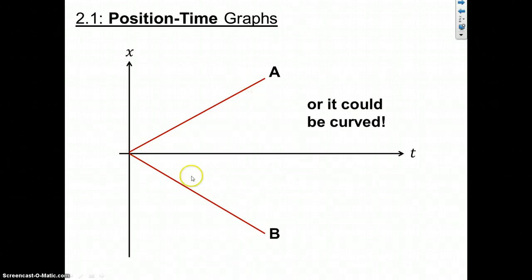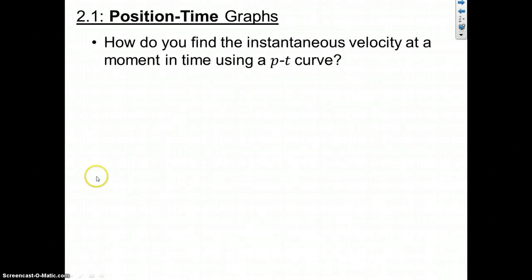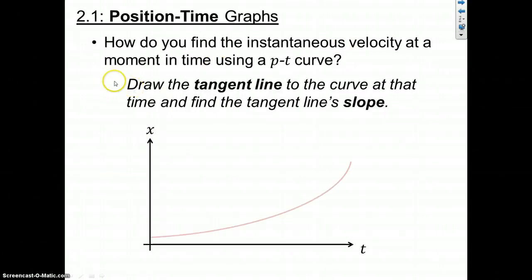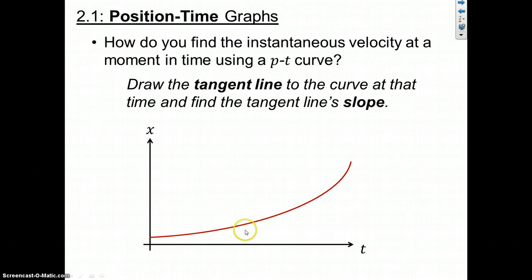It can be curved, right? If we have a curved line, the objects are still getting farther from the reference point. We know that velocity is the same as slope. So what if we have a curved line where the slope is changing? There's a different process you use to find the slope, and what that process involves is drawing what we call a tangent line.